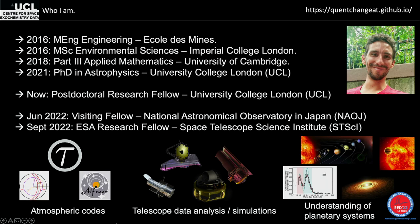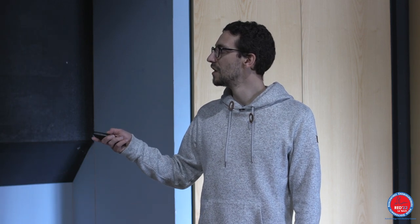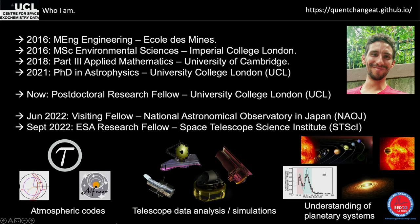There are three things I'm very interested in. The first is atmospheric codes — I write modeling codes, specifically what we call an atmospheric retrieval code. I've developed a model and a population analysis tool to analyze exoplanet atmospheres not just one at a time, but as populations. The four telescopes I work with are HST, Ariel, Spitzer, and JWST.